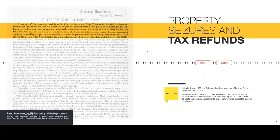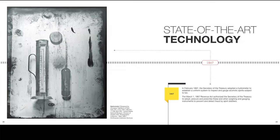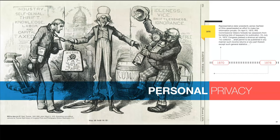To the people of the United States: by an act of Congress approved, the Secretary of the Treasury was authorized to issue an amount not exceeding $200 million in Treasury notes — U.S. Treasury Department, Washington, 1864. In February 1867, the Secretary of the Treasury adopted a hydrometer to establish a uniform system to inspect and gauge alcoholic spirits subject to tax. In March 1867, the Revenue Act authorized the Secretary to adopt, procure, and prescribe weighing and gauging instruments to detect fraud by distillers — state-of-the-art technology at the time.